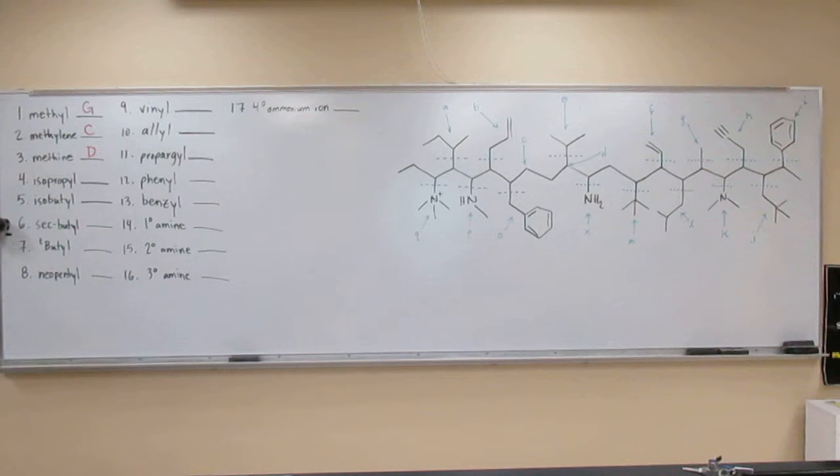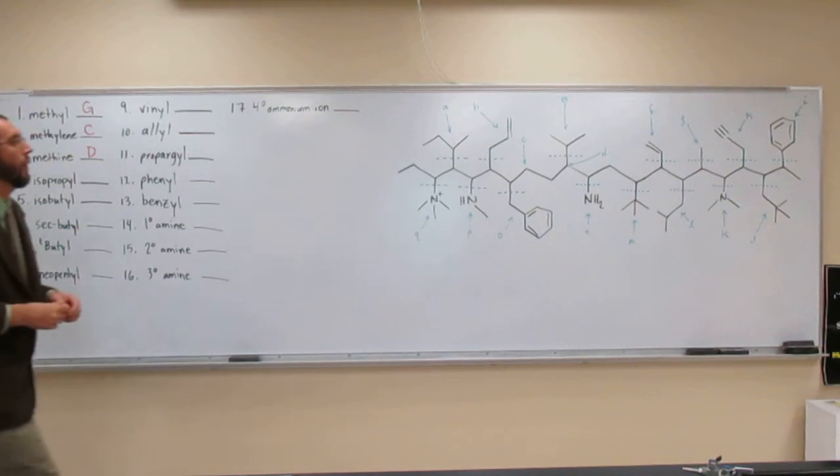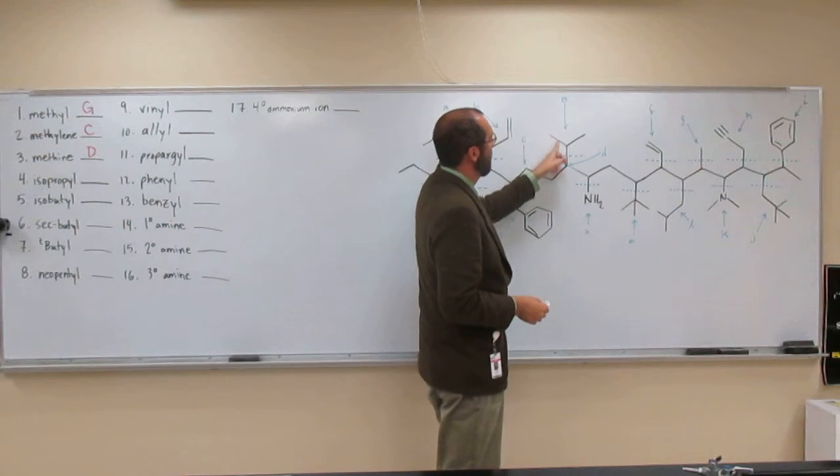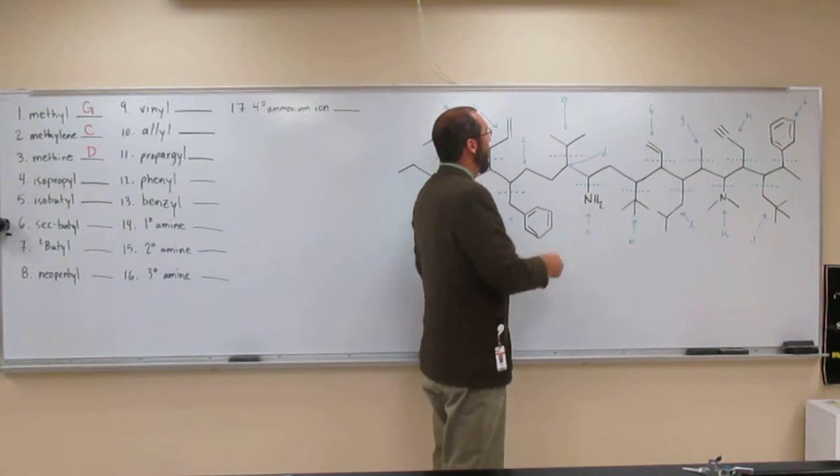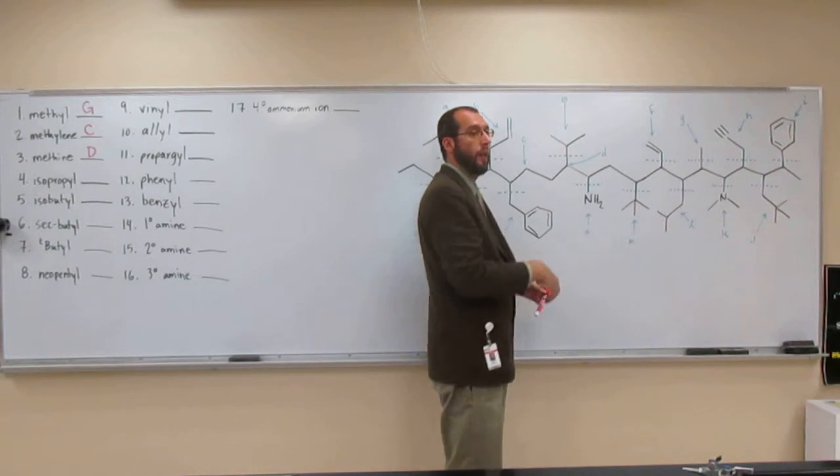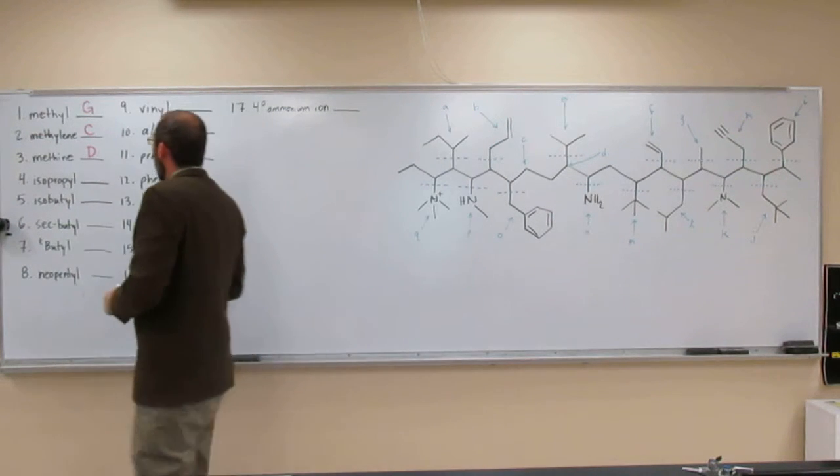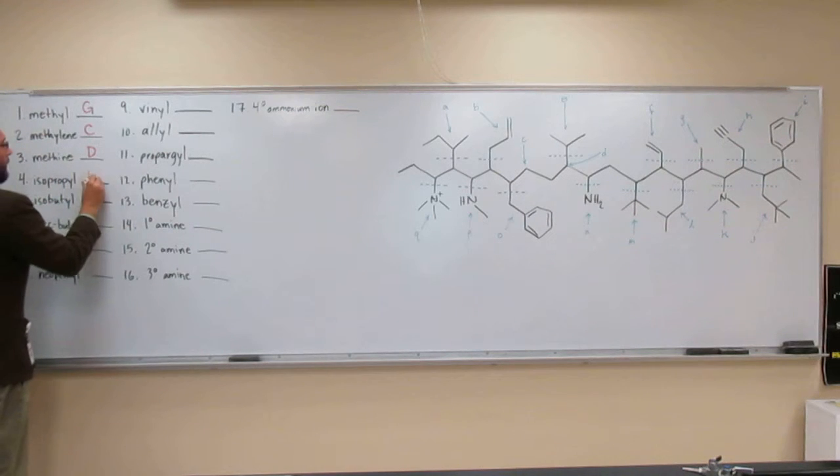So now we're getting into some of the groups. Isopropyl, well, you should know that one by now, that's here at E, right? So you see the propyl group, iso means that it comes off of that second carbon there, isopropyl does. So that's E.